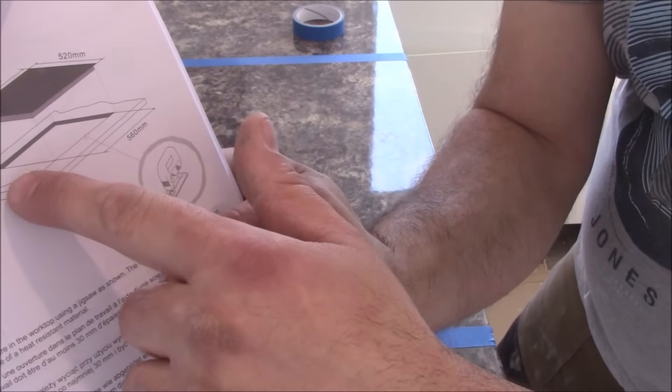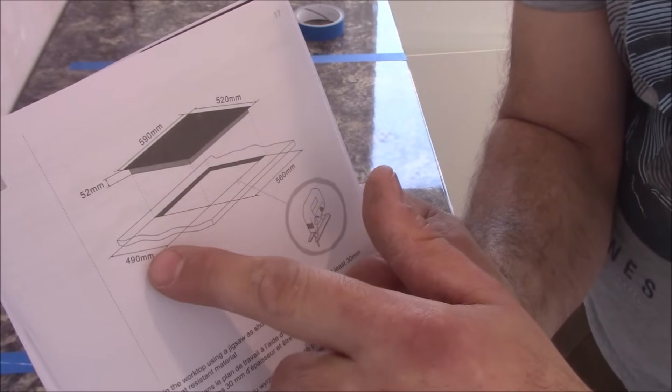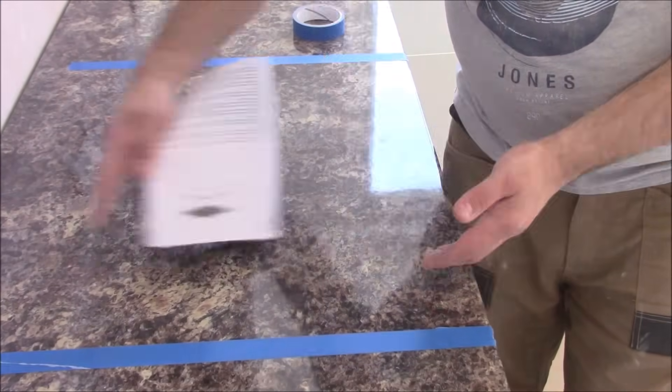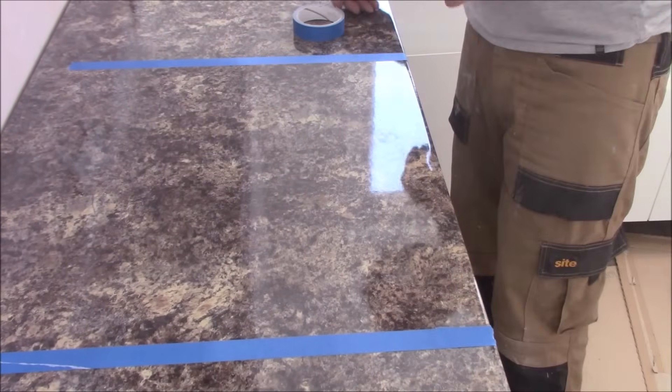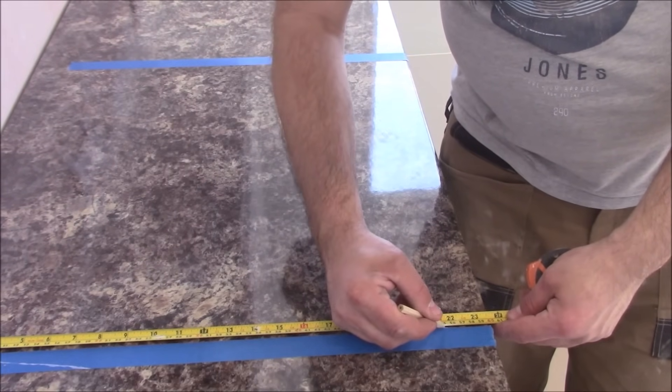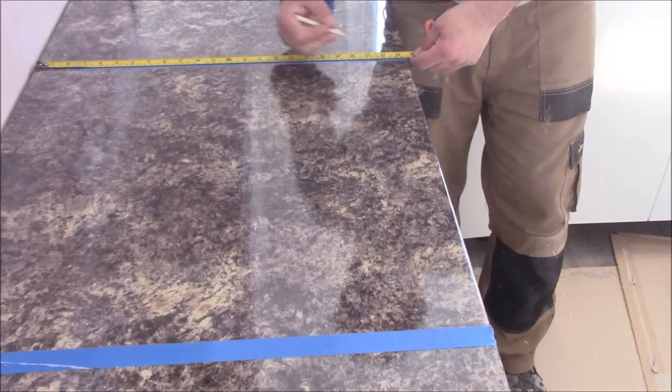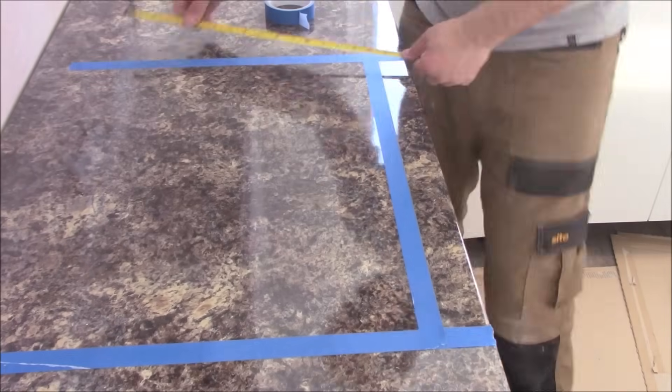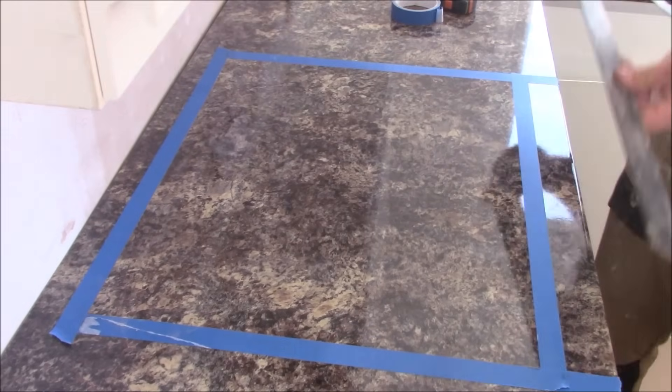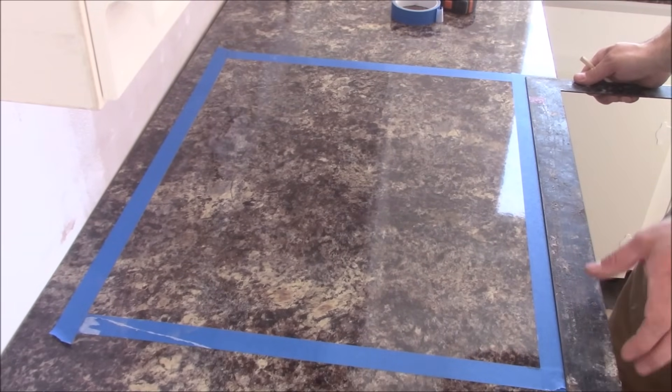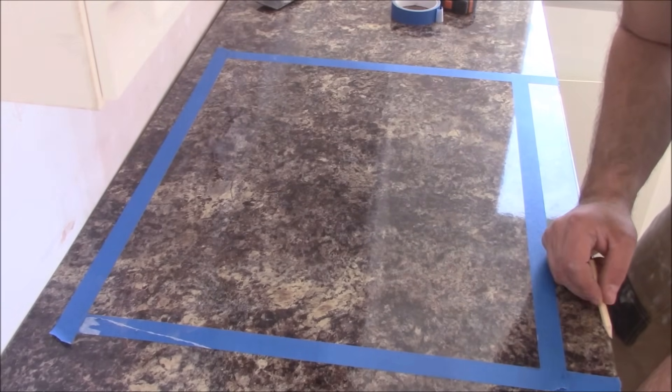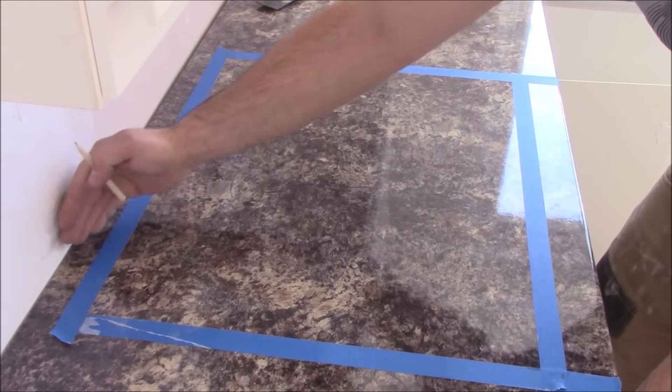Now let's have a look at the instruction. It says we need to cut out 49 cm by 56 cm. Obviously we keep the same distance between the edge and from the wall. This is going to be about 6 cm from the wall and 5 cm from the edge. Because I'm going to put 1 cm tile on top, so there will be exactly 5 on both sides.